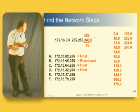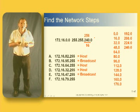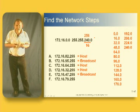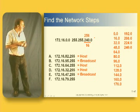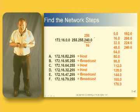Next one down, 47.255. That's one IP address before 48.0, so it's a broadcast address. The last one, 79.255, one IP address before 80.0, so it's a broadcast address again.